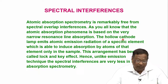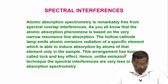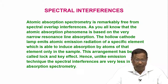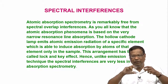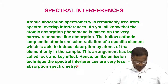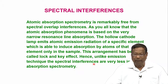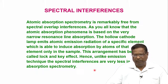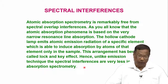The hollow cathode lamp emits atomic emission radiation of a specific element that is able to induce absorption of atoms. This arrangement is called the lock and key effect — the hollow cathode lamp emits the radiation and the free atom absorbs it. Unlike emission techniques, spectral interferences are very few in atomic absorption spectrometry because emission lines may be several hundreds, but resonance lines are very few — one or two, not more.